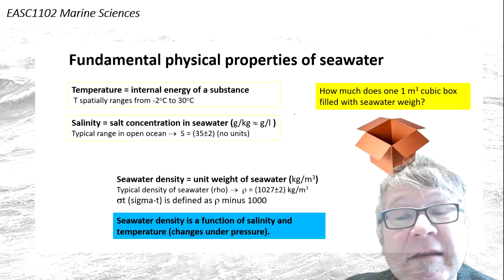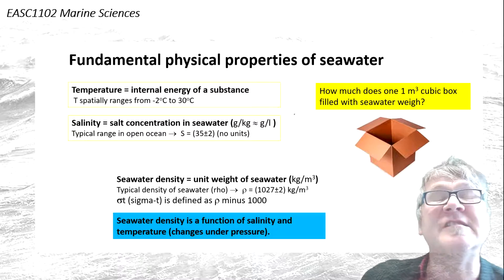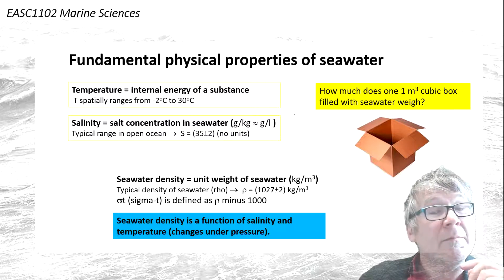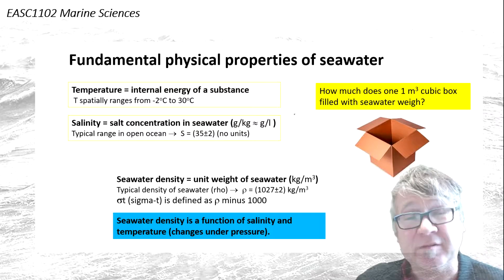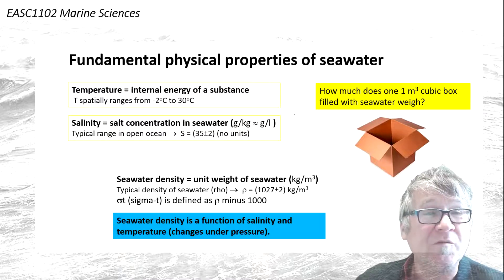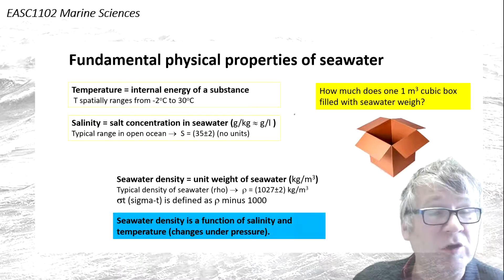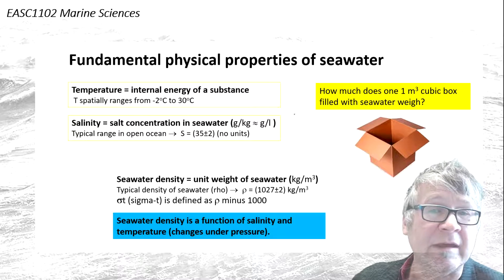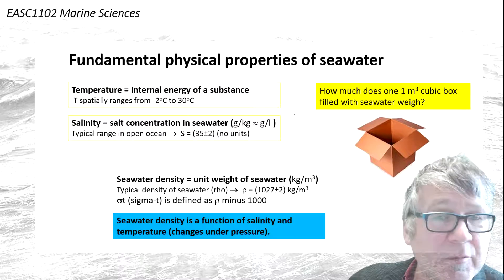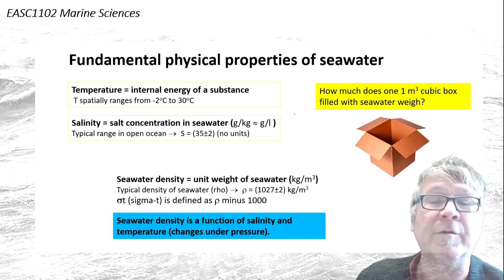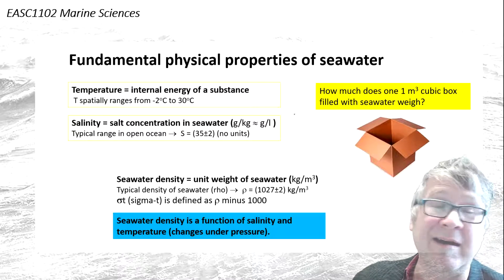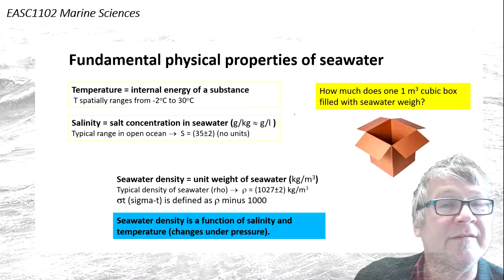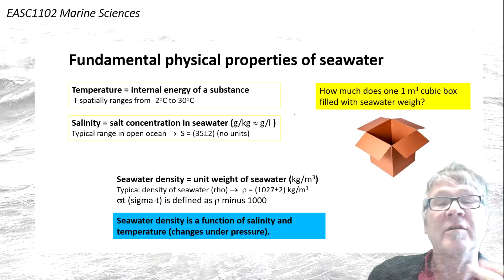Temperature and salinity are fundamental physical properties of seawater. We call them conservative properties — they don't have any sources or sinks in the ocean interior. They can only change through mixing with ambient water. So the salt content doesn't just disappear in the ocean.